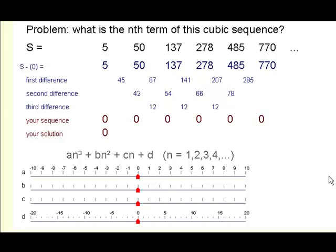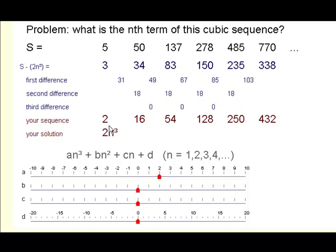Now what's the rule for working out the a value from that? The a value is always one-sixth of the third difference value. So a sixth of 12 is 2.